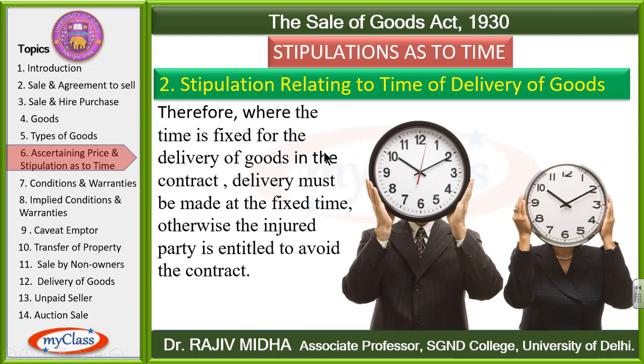Therefore, where time is fixed for delivery of goods in the contract, delivery must be made at the fixed time, otherwise the injured party is entitled to avoid the contract. In contrast, if payment is late, the seller cannot avoid the contract, but if delivery is late, the buyer has the option to avoid it. The seller must deliver goods at the time stipulated in the contract.